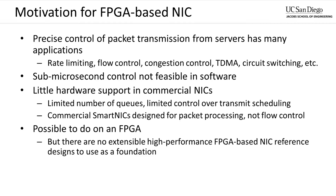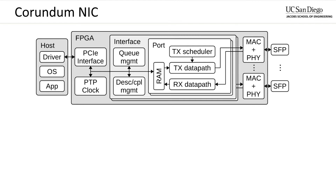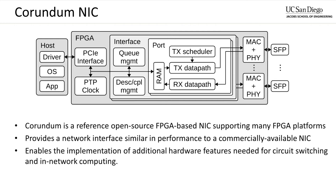However, it is possible to implement this on an FPGA. The only issue is that up until now, there have not been any high-performance reference designs that can be extended with this type of feature. This is where Corundum comes in. Corundum is a reference open-source FPGA-based NIC that supports many different FPGA platforms. It provides a network interface similar in performance to a commercially available NIC. It enables the implementation of additional hardware features needed for circuit switching and in-network computing.